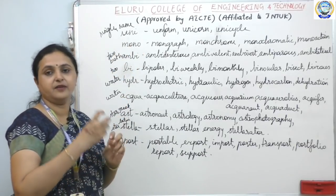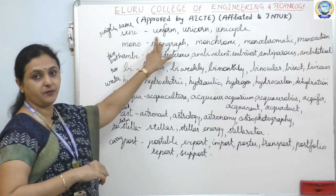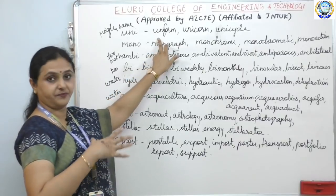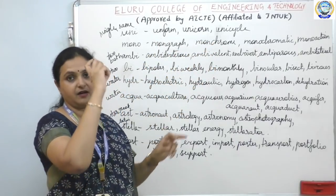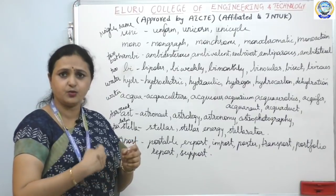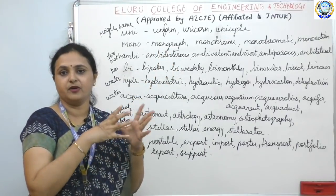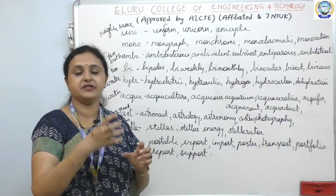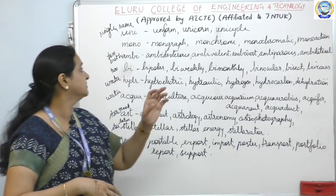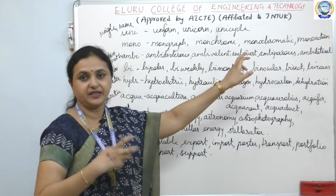Now for number-based roots: uni means one. Uniform — all the same. Unicorn is a single-horned animal. Unicycle has one big wheel. Mono also means single. Monograph is a single-color picture. Monochrome means single color — chrome means color. Monochromatic means related to one color. Monoact — one person doing the action.